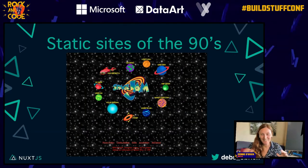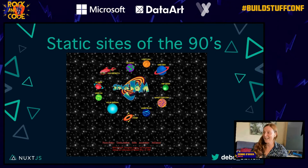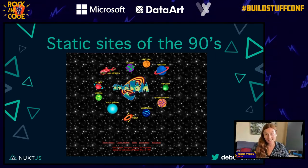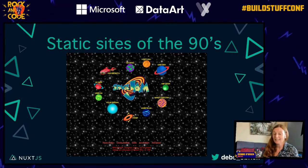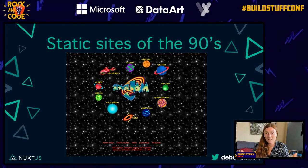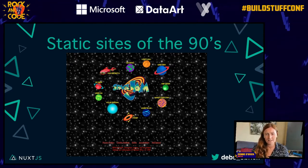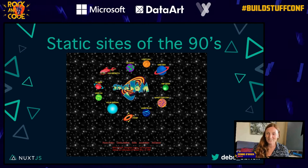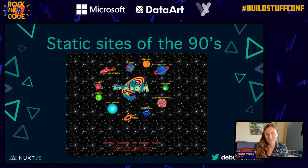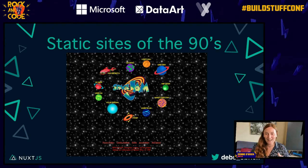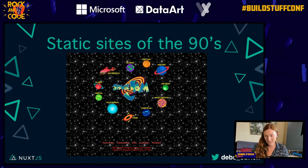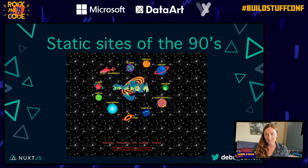Static sites back to the 90s. This is the most iconic static site ever created — it's still live today. Built in 1996 by Warner Brothers, it's the Space Jam movie website. It's brilliant — all those planets are links. They're somewhat badly designed by today's standards, but go to this website and click all those links. It's really cool. I'm going to tell you a little story about Space Jam because it's really interesting.